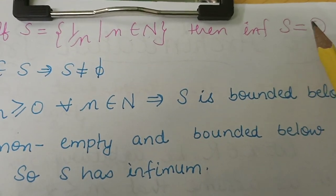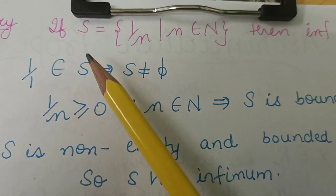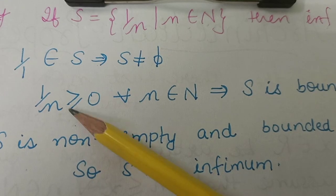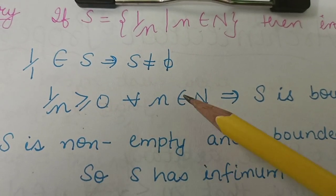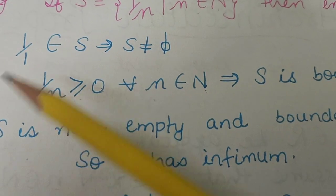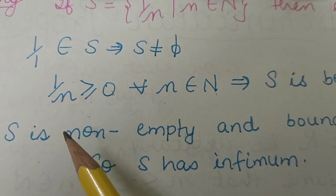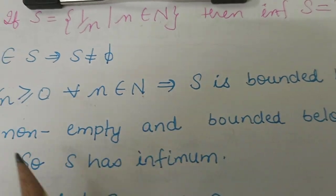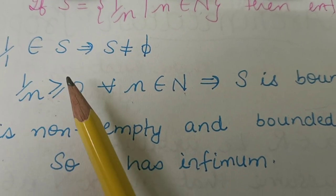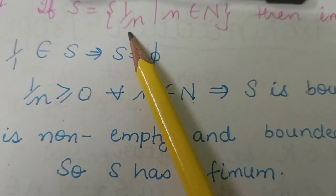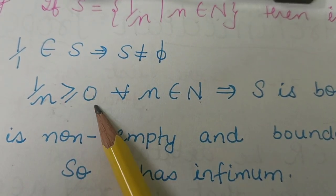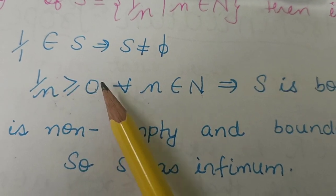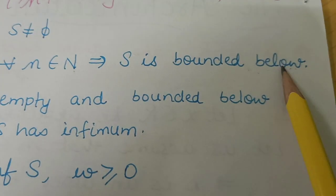Now let's consider the set S = {1/n : n ∈ ℕ}. Since 1 belongs to the natural numbers, this is a non-empty set. We note that 1/n ≥ 0 for all n ∈ ℕ, and 1/n > 0. So 0 is a lower bound of S, meaning S is bounded below.